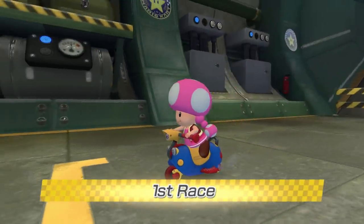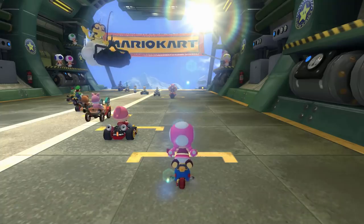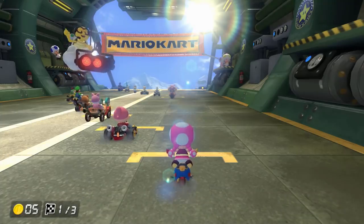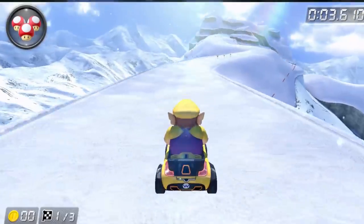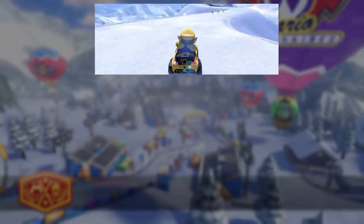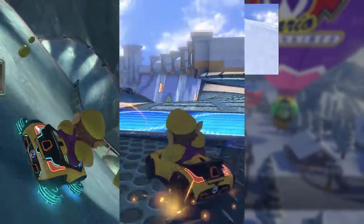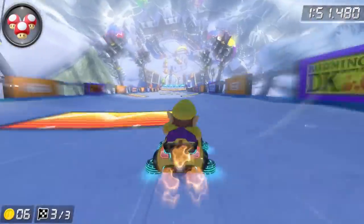Mount Wario takes things to a whole other level. Replacing the typical three laps in this racetrack are three distinct sections: the icy mountain peak, the middle section featuring the cavern, Wario dam, and the forest, and the final ski hill home stretch.